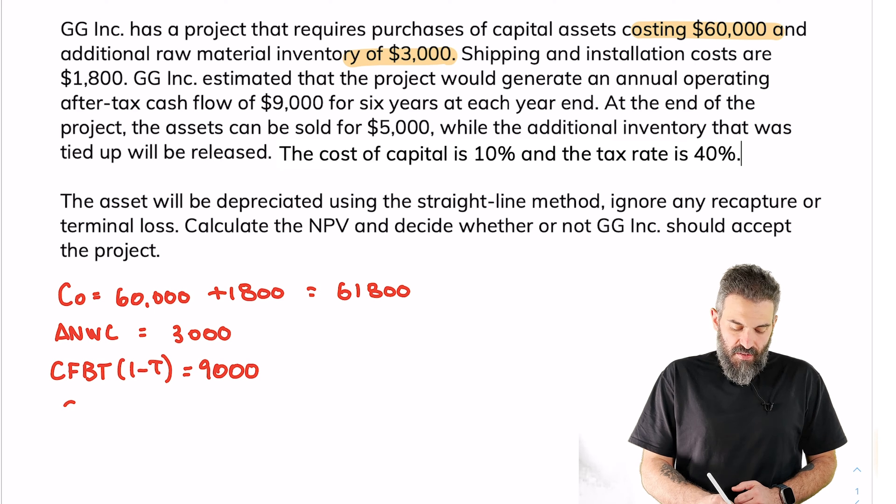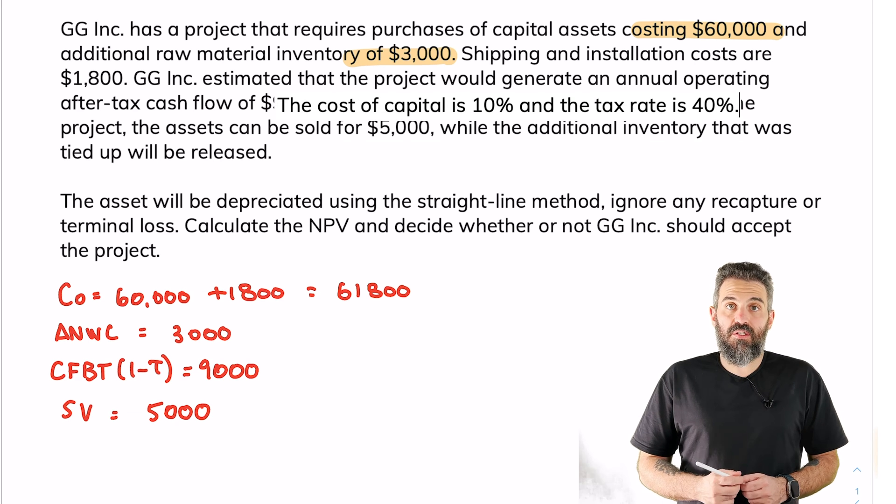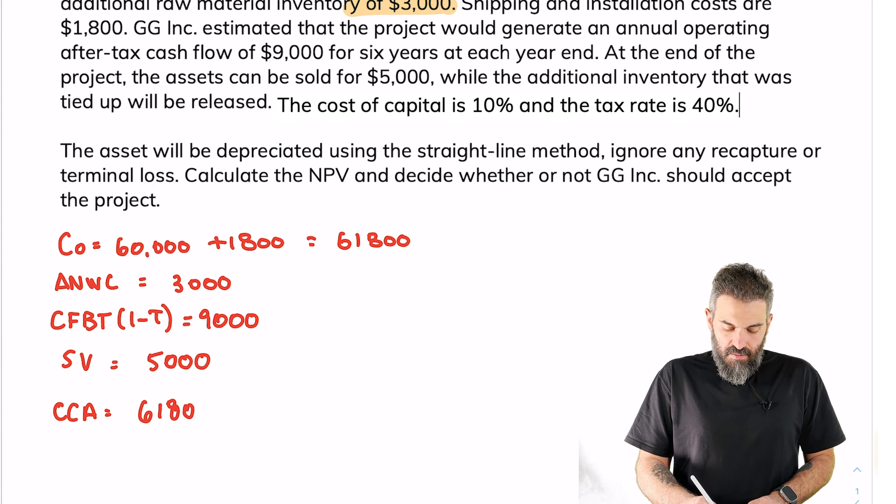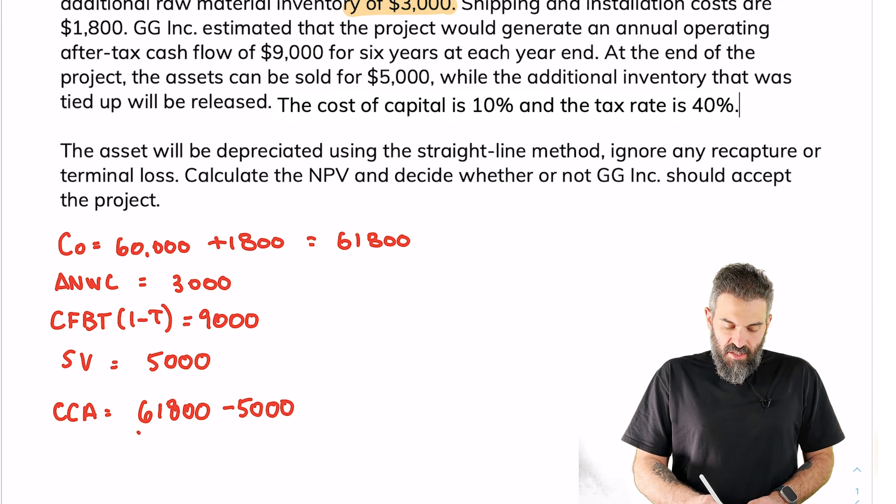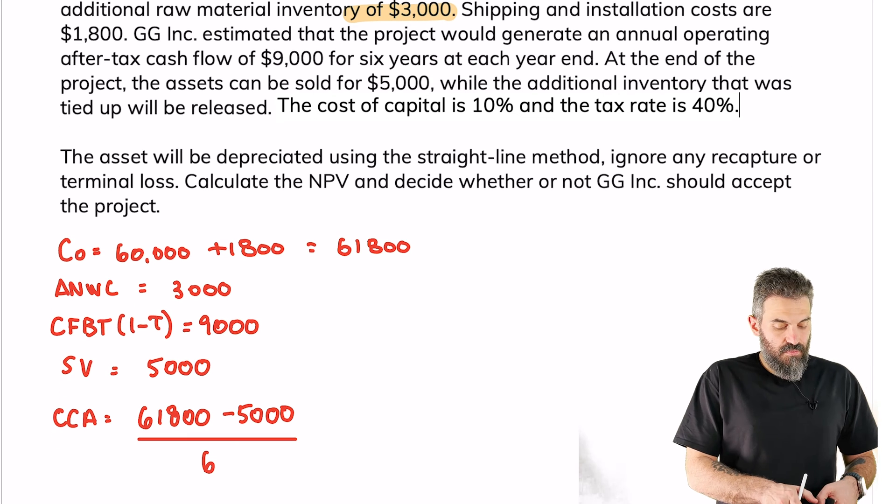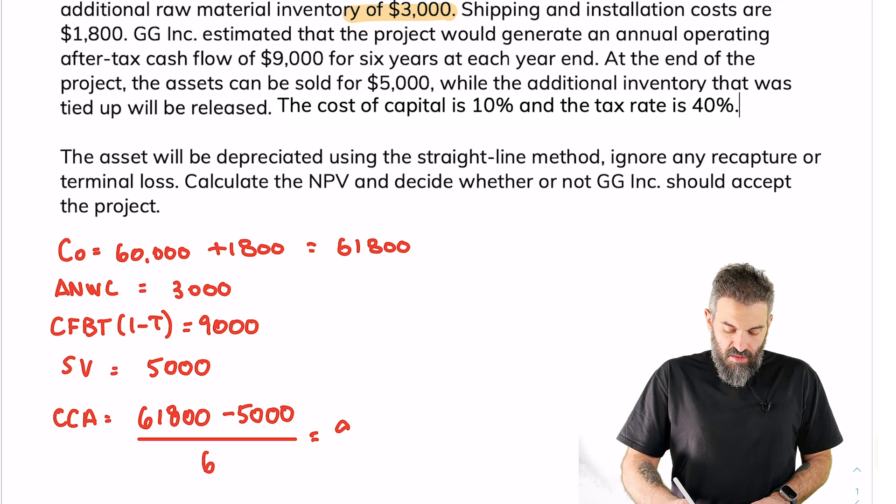The salvage value is $5,000 and we're going to use the straight-line method. So let's calculate CCA. This depreciation would be $61,800 minus your salvage value divided by the life of the project, which I believe they said was six. So the annual depreciation on this would be $9,466.67.